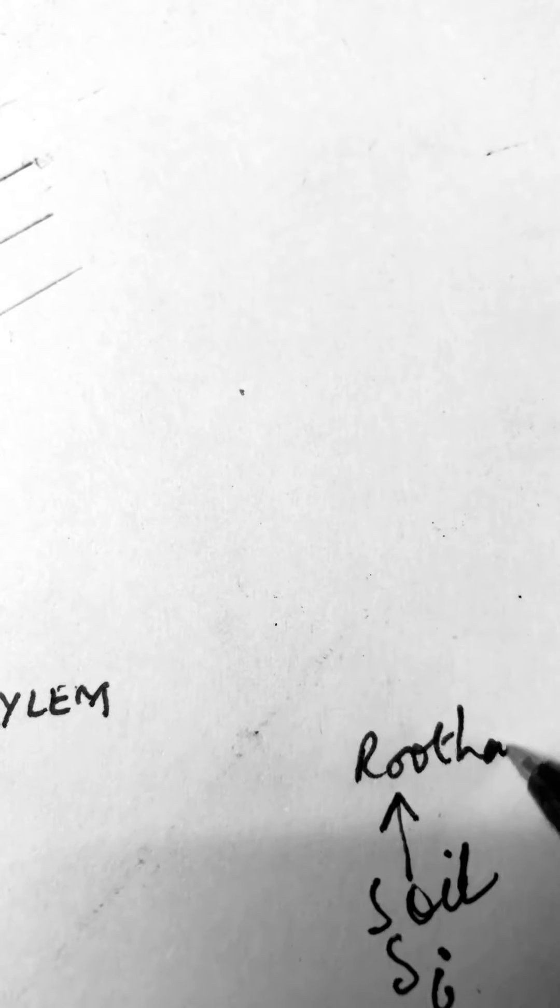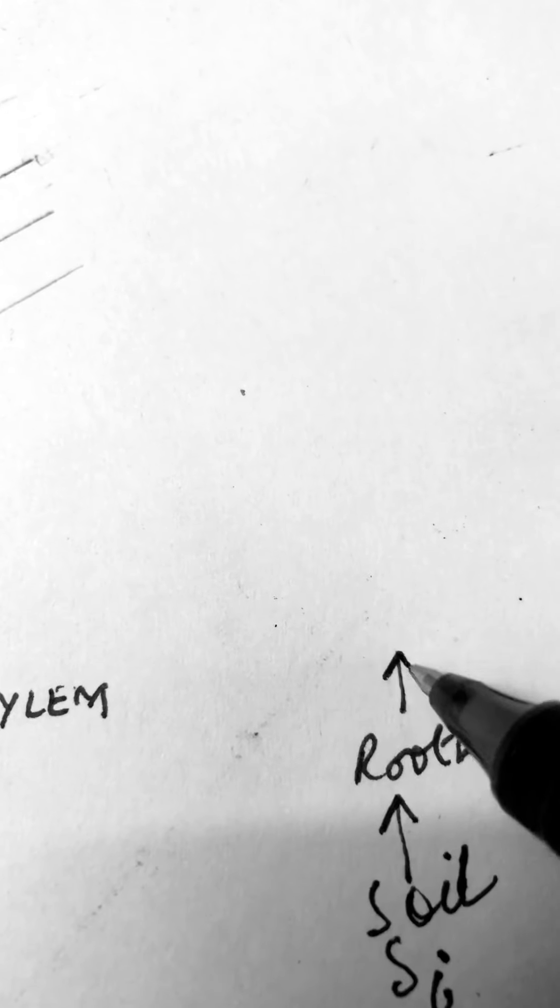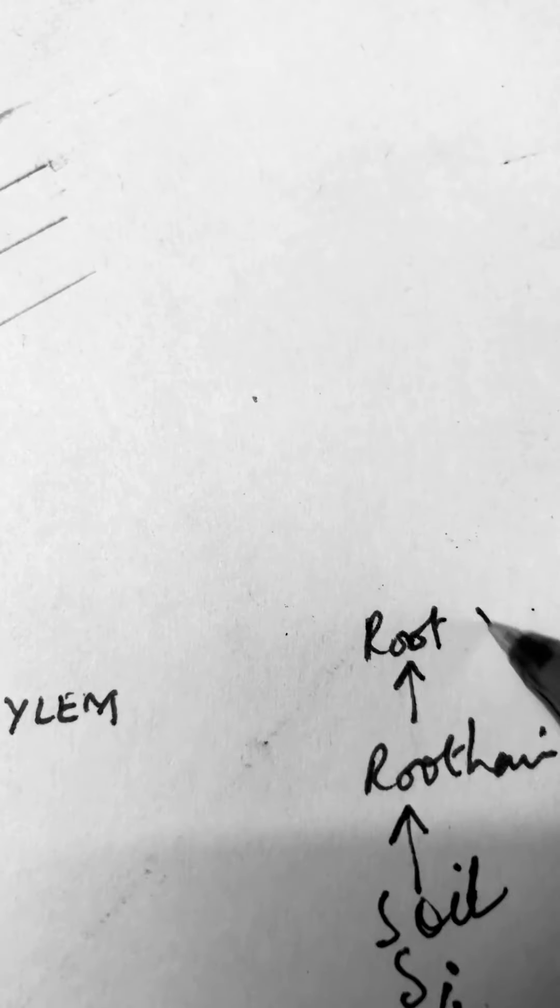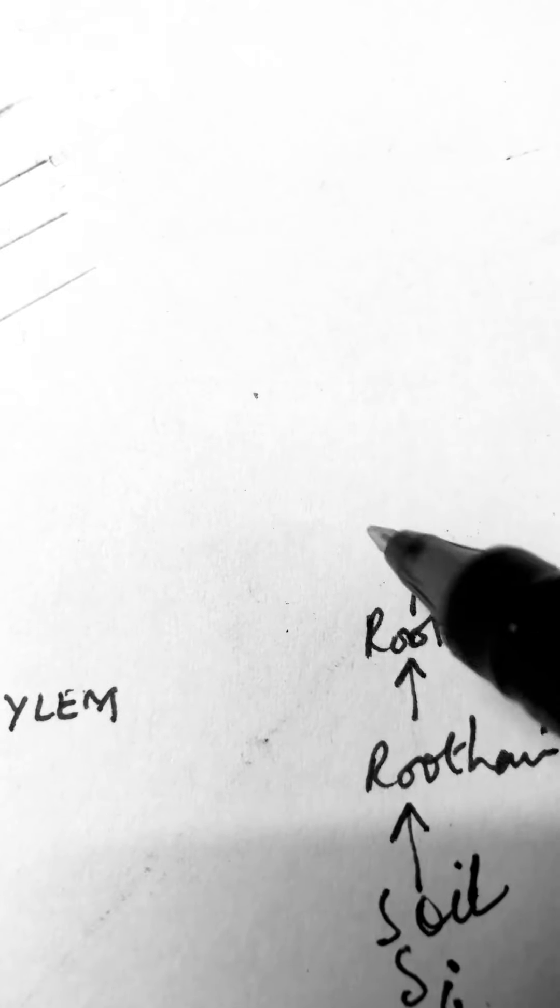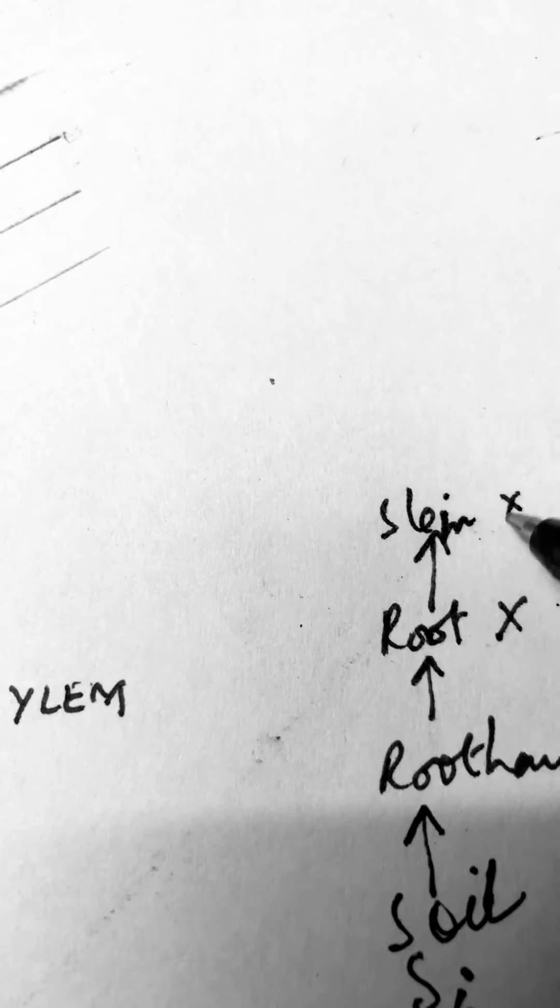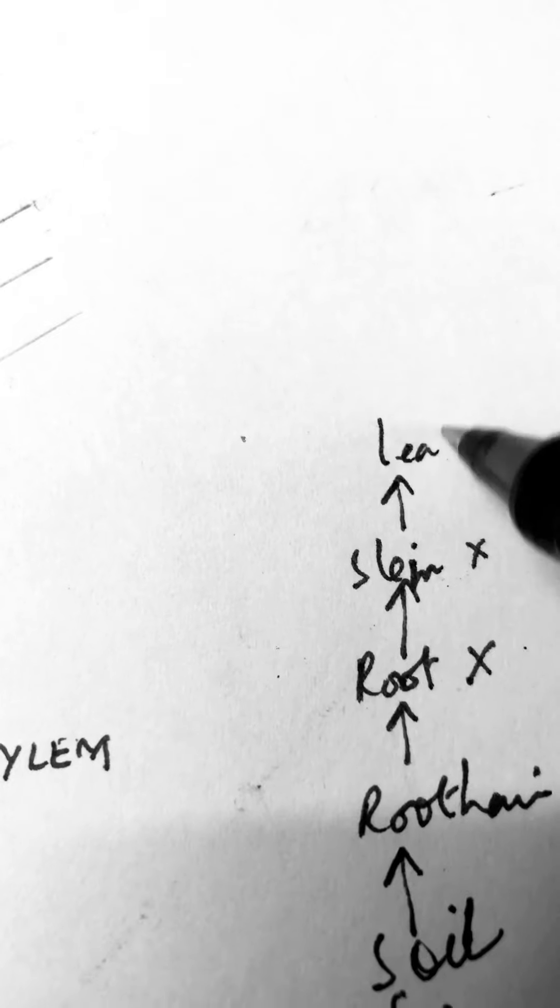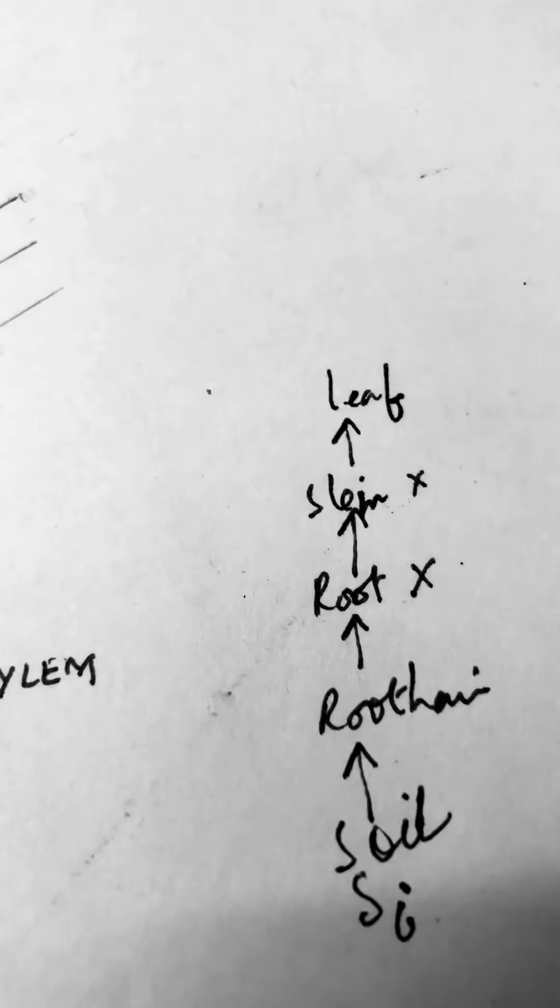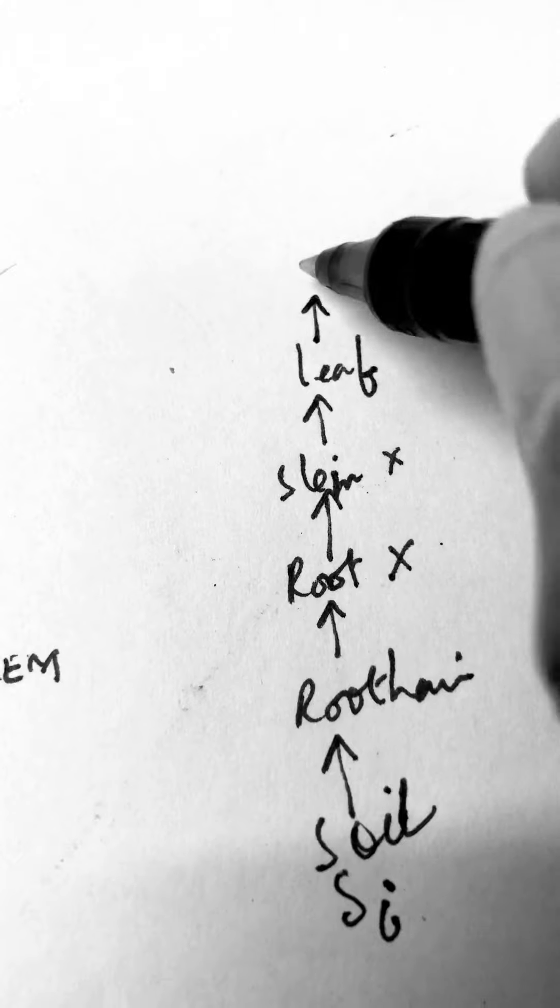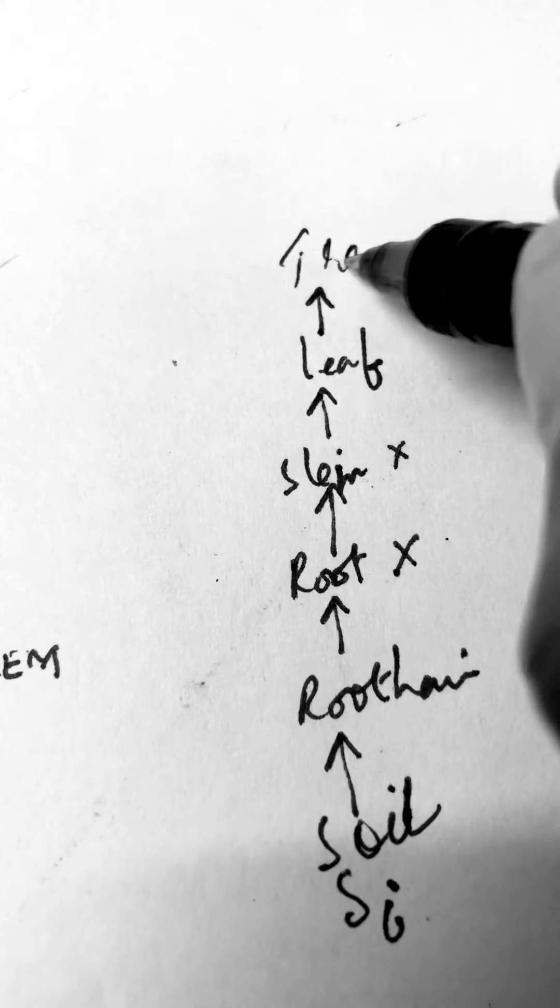So, if you trace the path of water, the water from the soil moves into the root hair. From the root hair, it enters into the root xylem. From the root xylem into the stem xylem. From the stem xylem, it enters into the leaf. So, this is the path of the water and then finally, it moves out through the stomata.